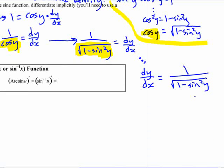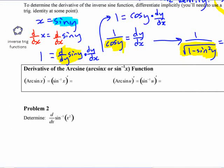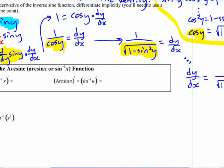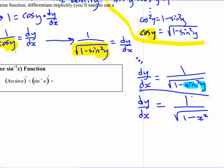If you change it around now, we can substitute sine of y, we know what that's equal to, right? It says at the beginning here that sine of y is equal to x. So you can replace sine of y with x, and then you have what the derivative is. 1 over square root of 1 minus x squared.